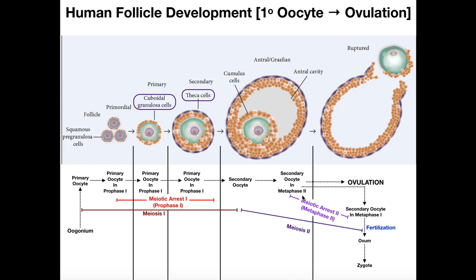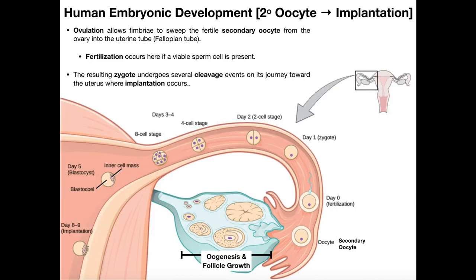The secondary oocyte is picked up by the fimbriae from the ovary — this is where oogenesis and folliculogenesis are occurring. When ovulation occurs, the fimbriae pick up the secondary oocyte and it moves into the infundibulum of the fallopian tube, where it sits and awaits a sperm cell.